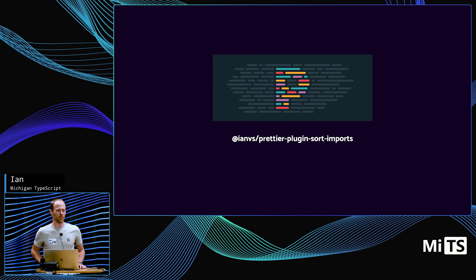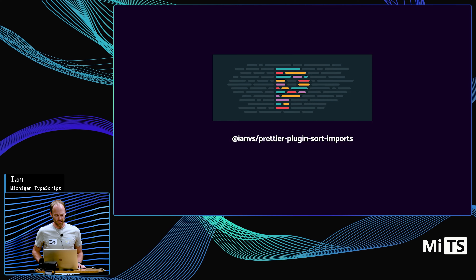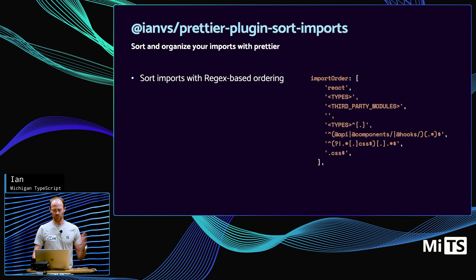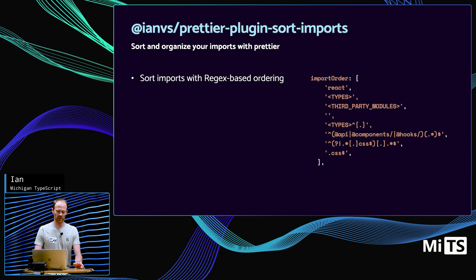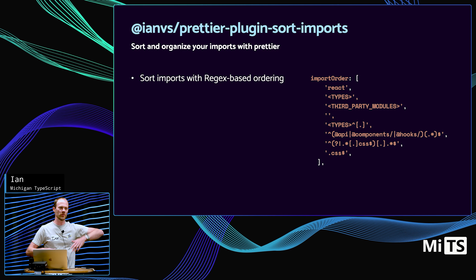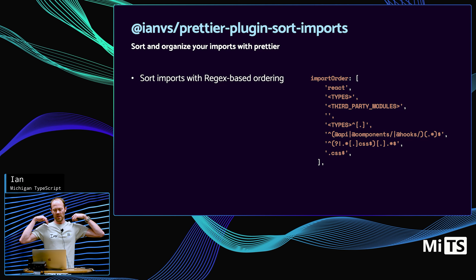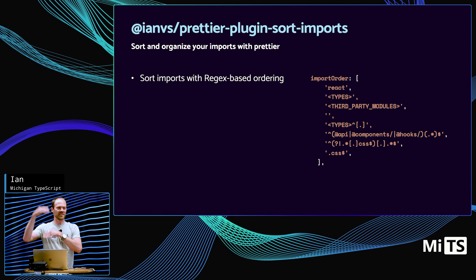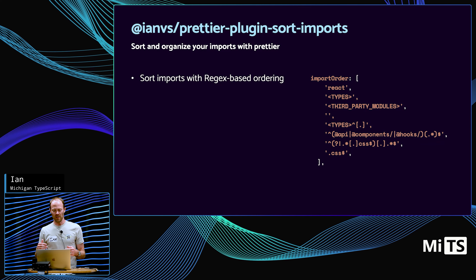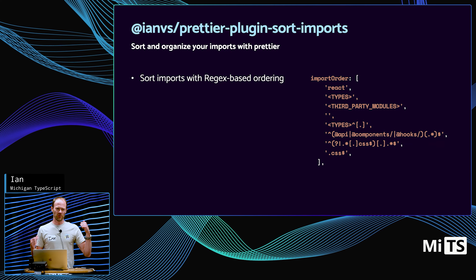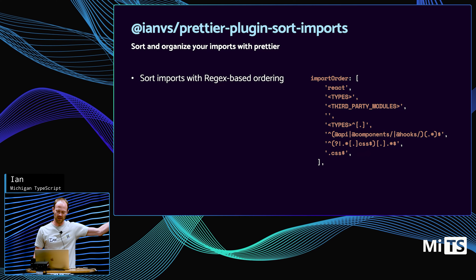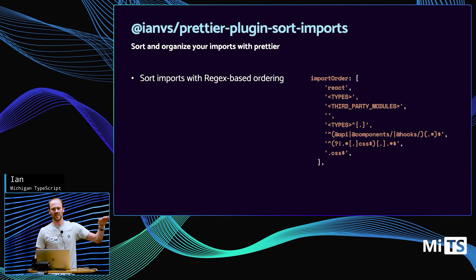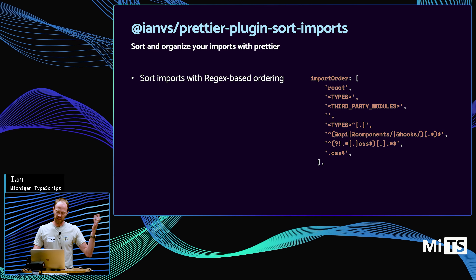I have a Prettier plugin that can also help with organizing imports. It uses a regex-based ordering. For example, maybe you always want React imports at the very top, then types from third-party modules, then the actual third-party modules, then a space to separate your code from third-party stuff, then local types, maybe alias imports like @api, @components, @hooks, then everything that's not CSS, and then any CSS if you're using CSS modules.